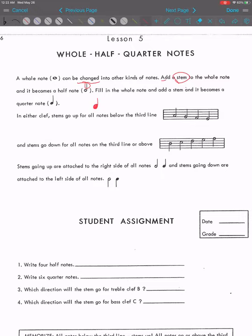In either clef, stems go up for all notes below the third line. So if you have lower notes, it will be easier to read the notes if the stems go up and it's on the right side of the note. And the stems will go down for all notes on the third line or above. That way, when you write a high note with the stem, it will be more appropriately placed so you won't disturb the space between the staff lines.